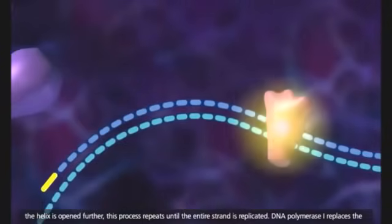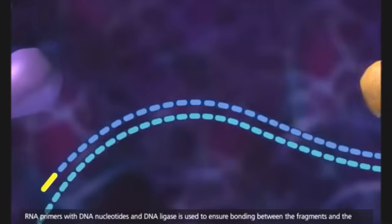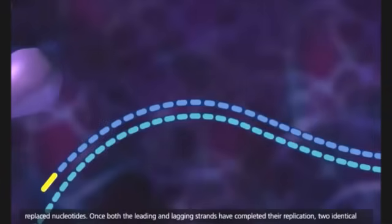DNA polymerase 1 replaces the RNA primers with DNA nucleotides, and DNA ligase is used to ensure bonding between the fragments and the replaced nucleotides.